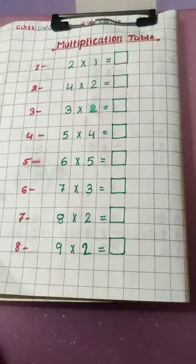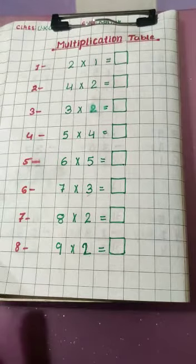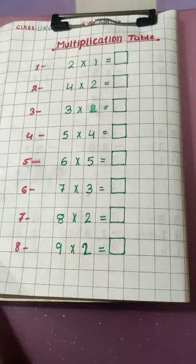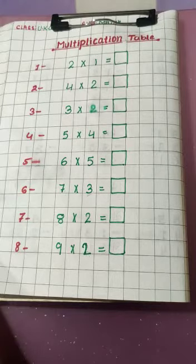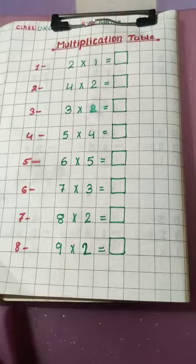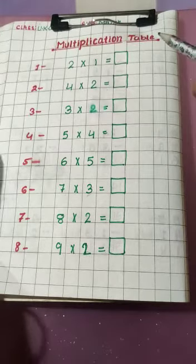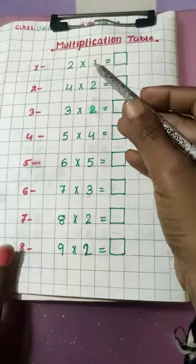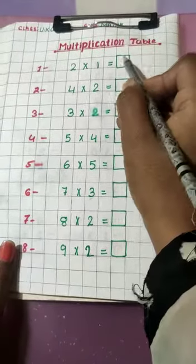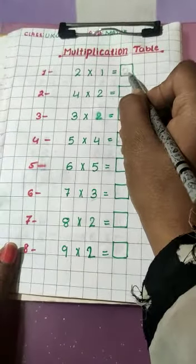First one, 2 into 1 equal to. We will recite two tables. We have to write the answer to the table. You know the table now? Good. Now see, 2 plus 2, write here, 2.